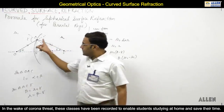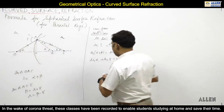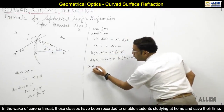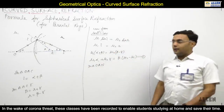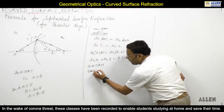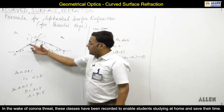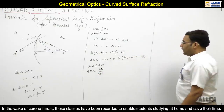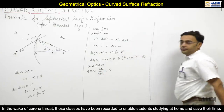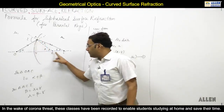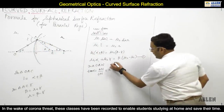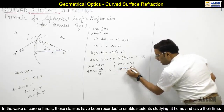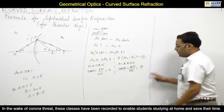Now I need the values of alpha, beta, and gamma. In triangle OAN, tan alpha = AN/OAN, and since the angle is small, tan alpha equals alpha. Similarly, in triangle ANC, tan beta = AN/NC, so beta = AN/NC. And in triangle ANI, tan gamma = AN/NI, so gamma = AN/NI.